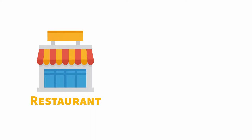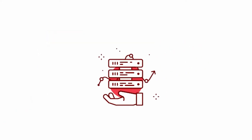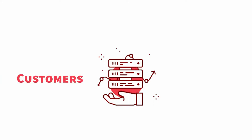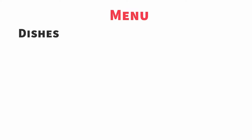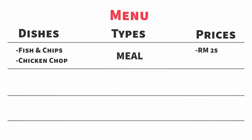Let's say you're running a restaurant and you have a database called 'restaurant'. The database has many tables that store data about our customers, suppliers, and menu. Inside the menu table we store the dish name, the type of dish, and the price — for example, fish and chips (main) costs 25 ringgit, chicken chop (main) costs 18 ringgit, coffee (drinks) 8 ringgit, tea (drinks) 4 ringgit.